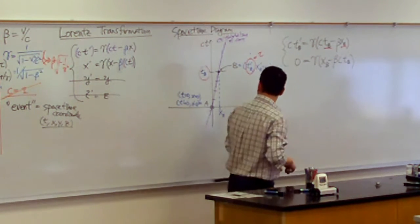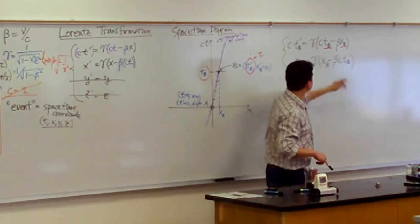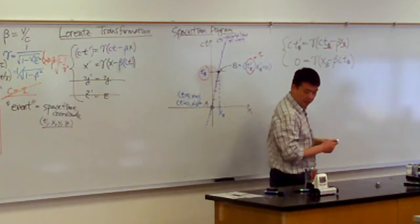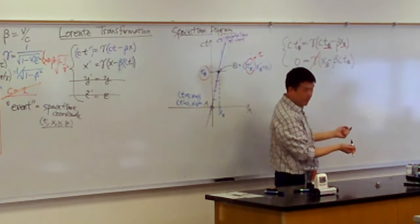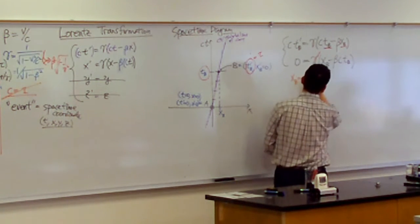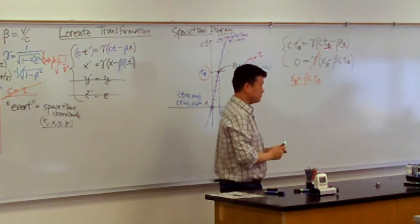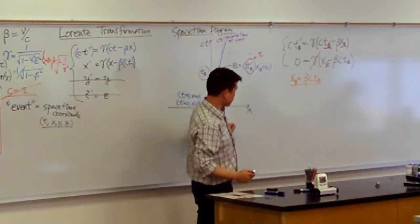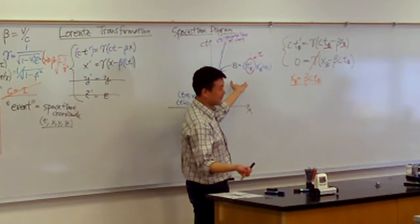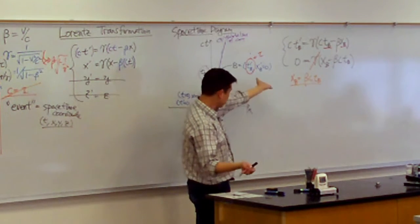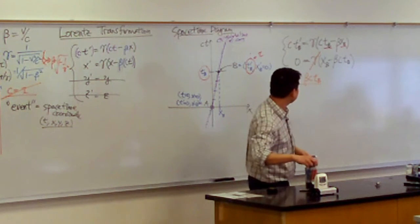I don't really care about X_B, so let me eliminate it and just solve for time. From the second equation, I can cancel out gamma since it's zero on the left side. Dividing by gamma, I get X_B equals beta times CT_B. Does this surprise anyone? Position equals velocity — beta times C — times time. If you were guessing, you would have guessed that, and it is correct from the Lorentz transformation. It's not giving you anything contradictory to your intuition yet.